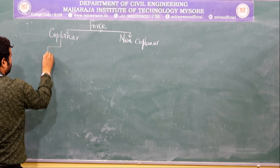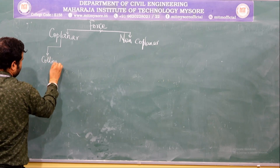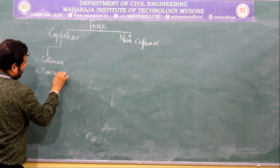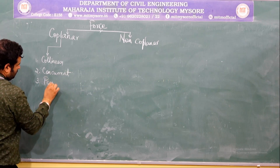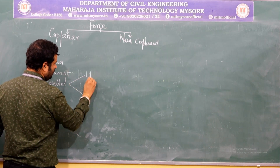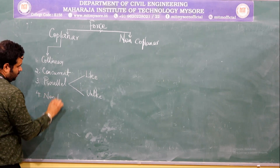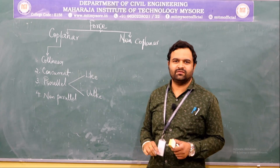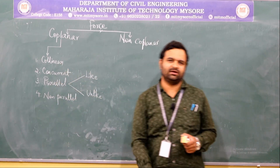In coplanar, the very first type is the collinear force. Second, we have the concurrent force system. Next, parallel force system — in parallel, we have like parallel and unlike parallel. Next, non-parallel force system. What do you mean by collinear? If the forces are having the same line of action or common line of action, then it is called a collinear force.